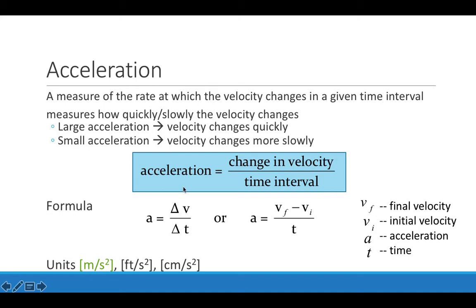This is actually the average acceleration because we could look at a large time interval. But the smaller the time interval, the closer the acceleration will be to what the object is at that instant in time. When the velocity of an object changes very quickly with respect to time, we say that the object has a large acceleration. And when it changes more slowly, it has a smaller acceleration.